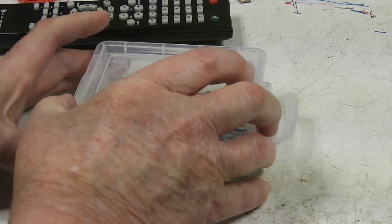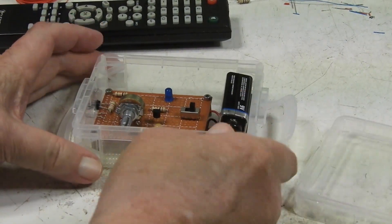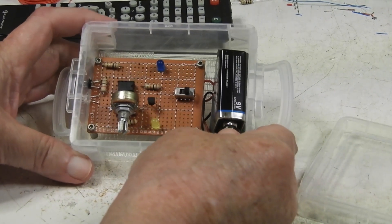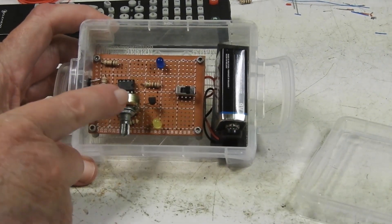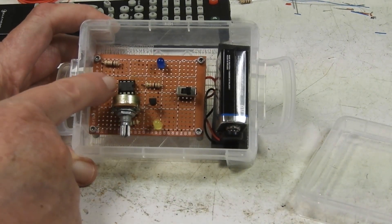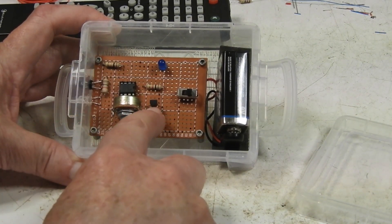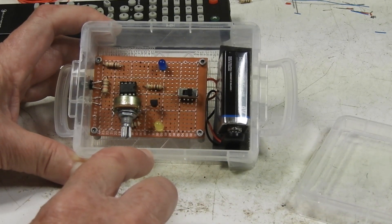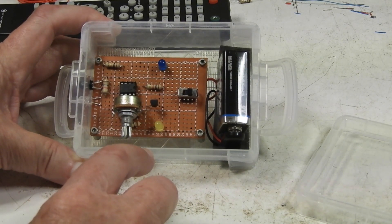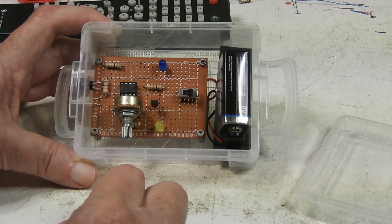There's the variable resistor, the chip, and right there is the PNP transistor. There's only a few resistors.